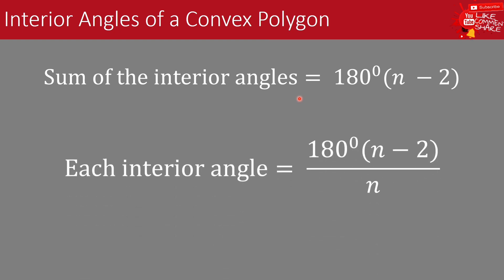For each interior angle of a regular convex polygon, each interior angle is equal to 180 degrees times the quantity of n minus 2, divided by n, where n is the number of sides.